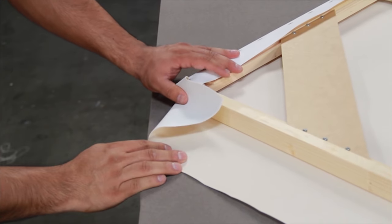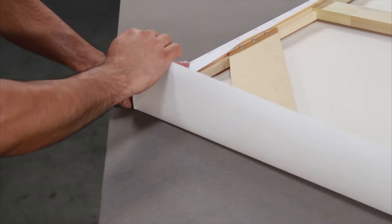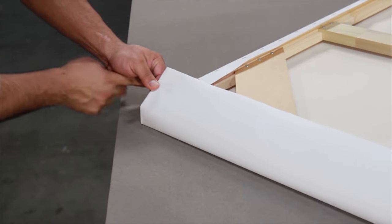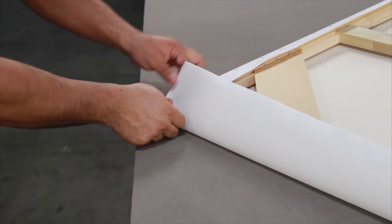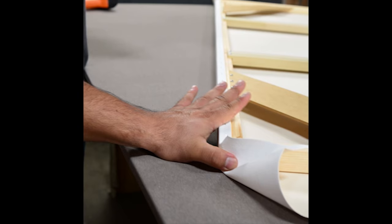First fold your canvas 45 degrees holding it against the stretcher bar with your thumb. Now fold the canvas up and over the corner, creasing the corner with your fingers, and folding it so that it's even with the edge of your stretcher bar.